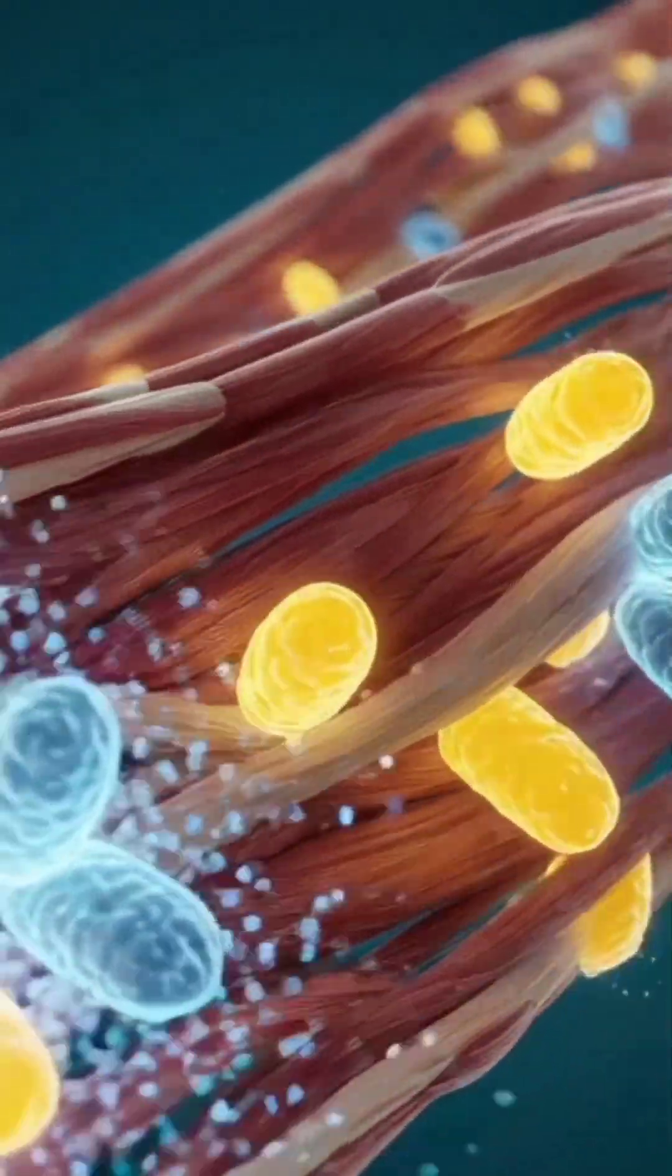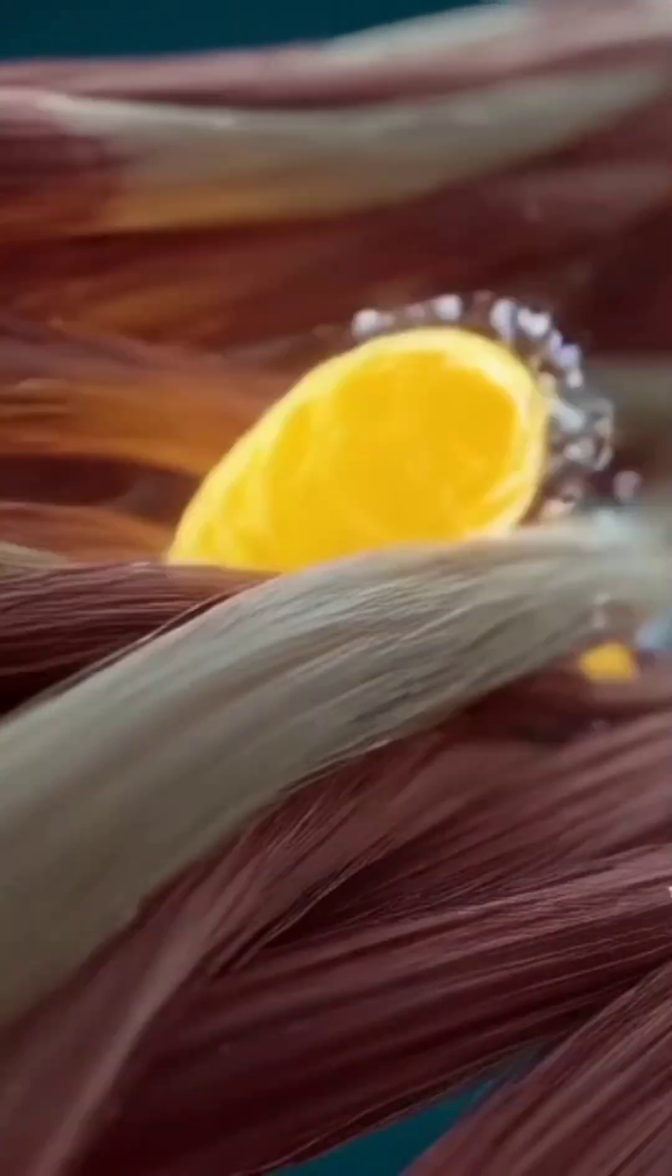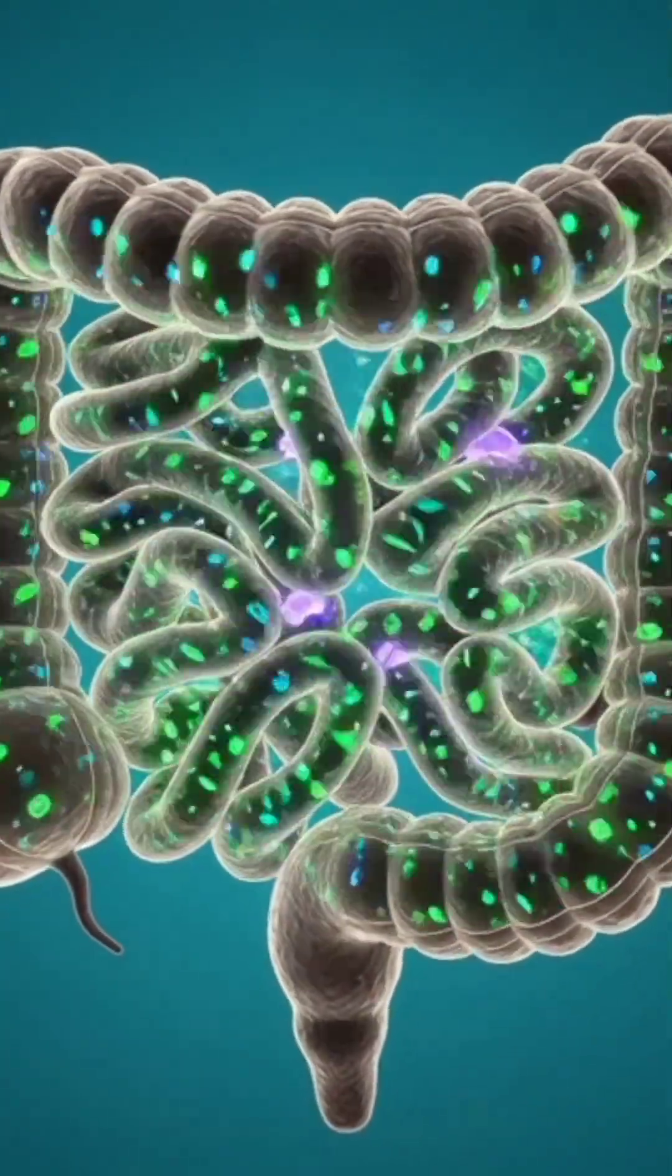Inside the small intestine, essential nutrients like potassium, vitamin C, and plant polyphenols quickly enter the bloodstream to energize the body.